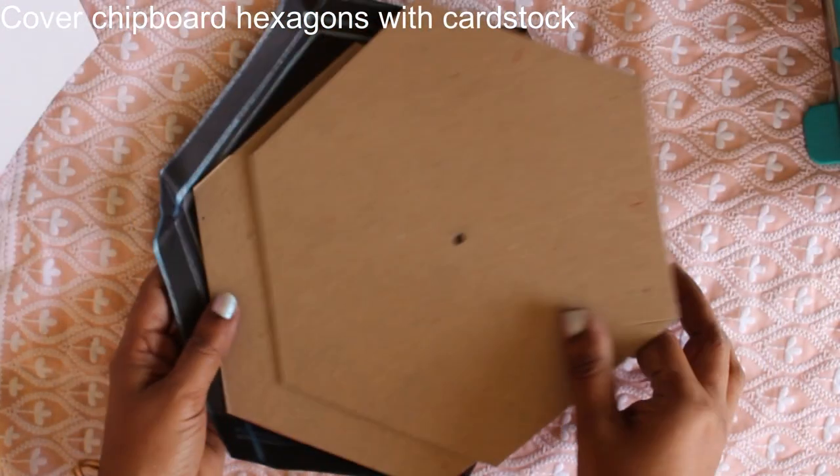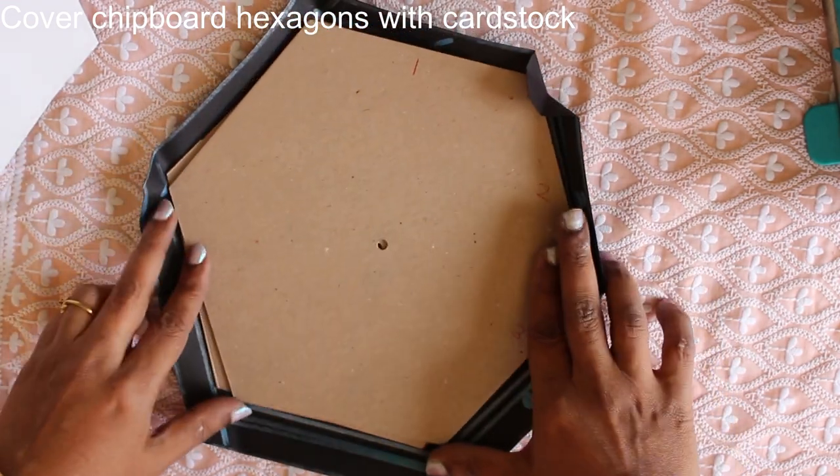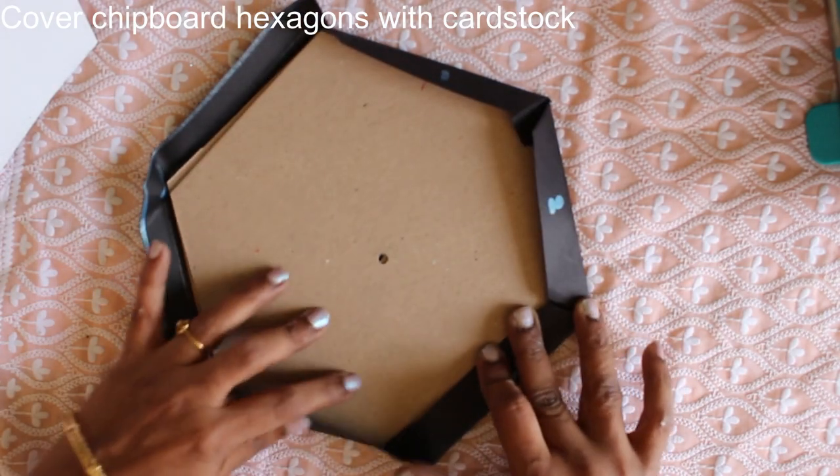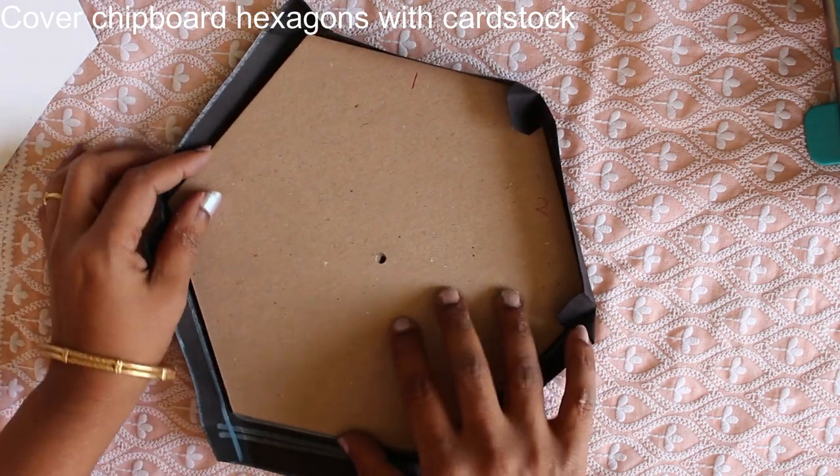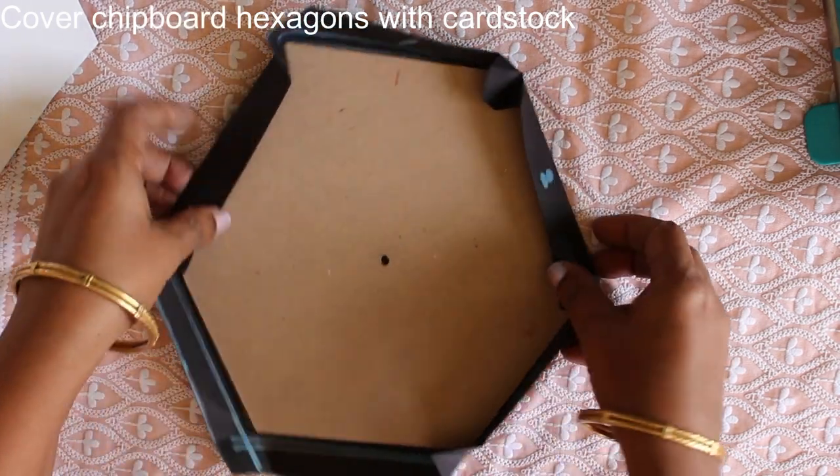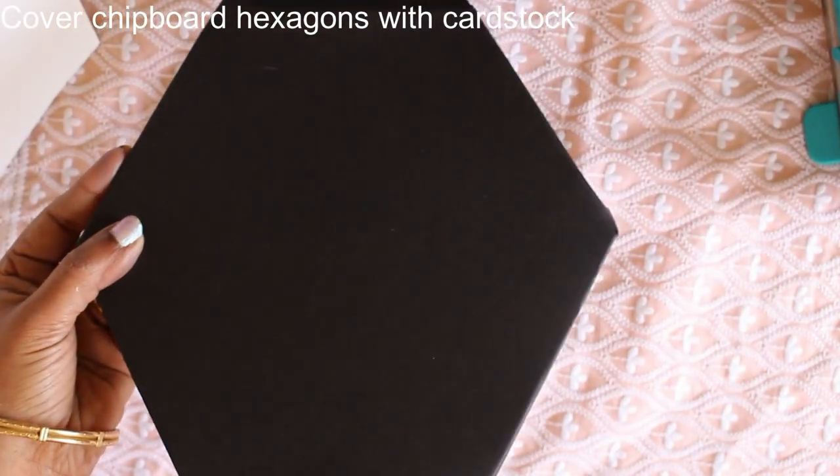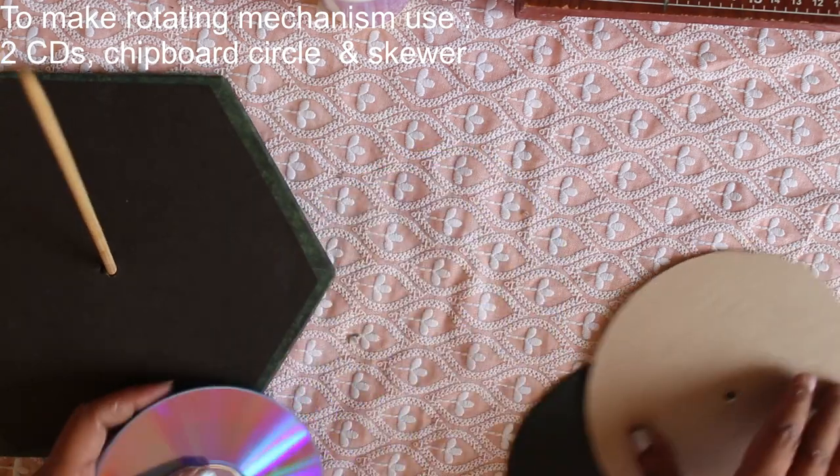Wrap the chipboard pieces in cardstock. I have used black cardstock here. And these are the gluing tabs which will help glue it all together. This black cardstock piece should also have a hole punched out. In this picture frame you don't see a hole but a hole needs to be punched to hold a skewer.